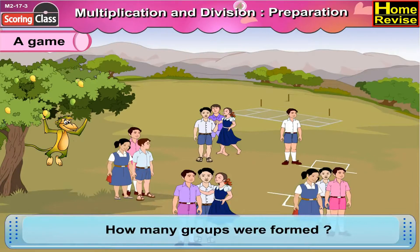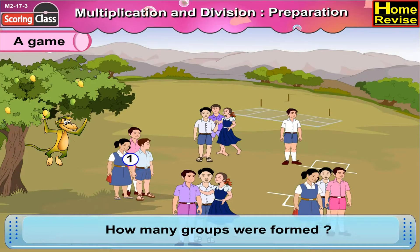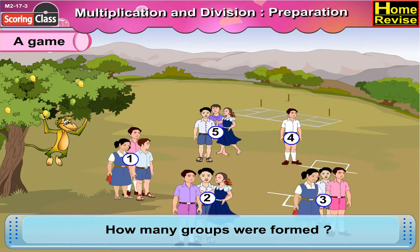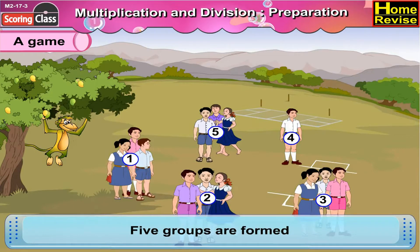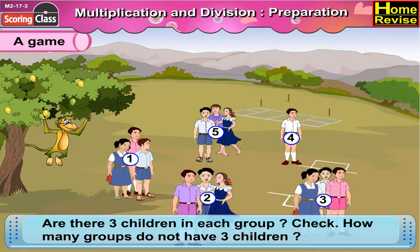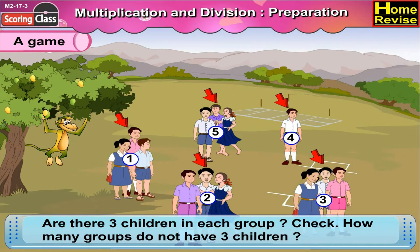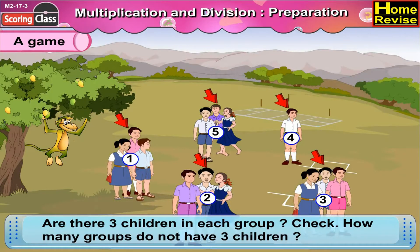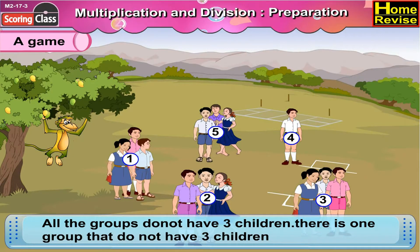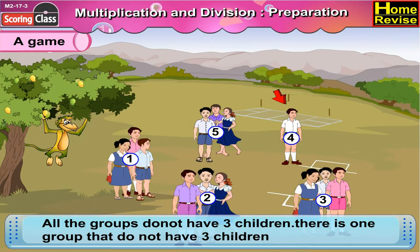How many groups were formed? 1, 2, 3, 4, 5. Five groups were formed. Are there three children in each group? Check. How many groups do not have three children? Let's check that. Well, all the groups do not have three children. There is one group which does not have three children.